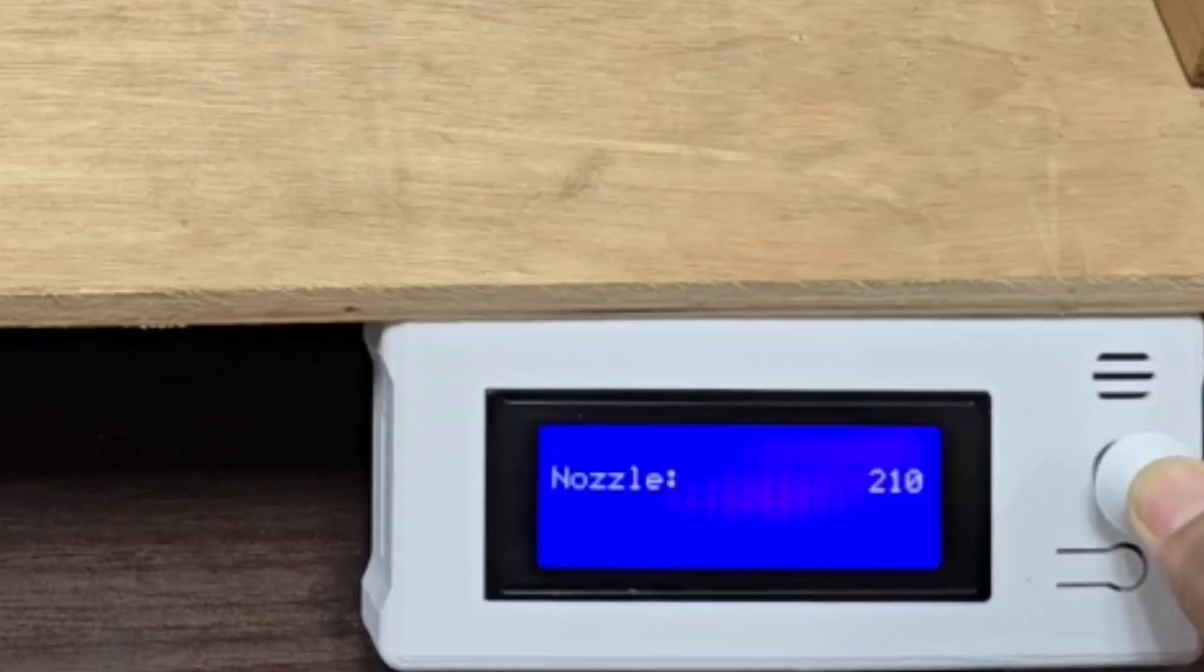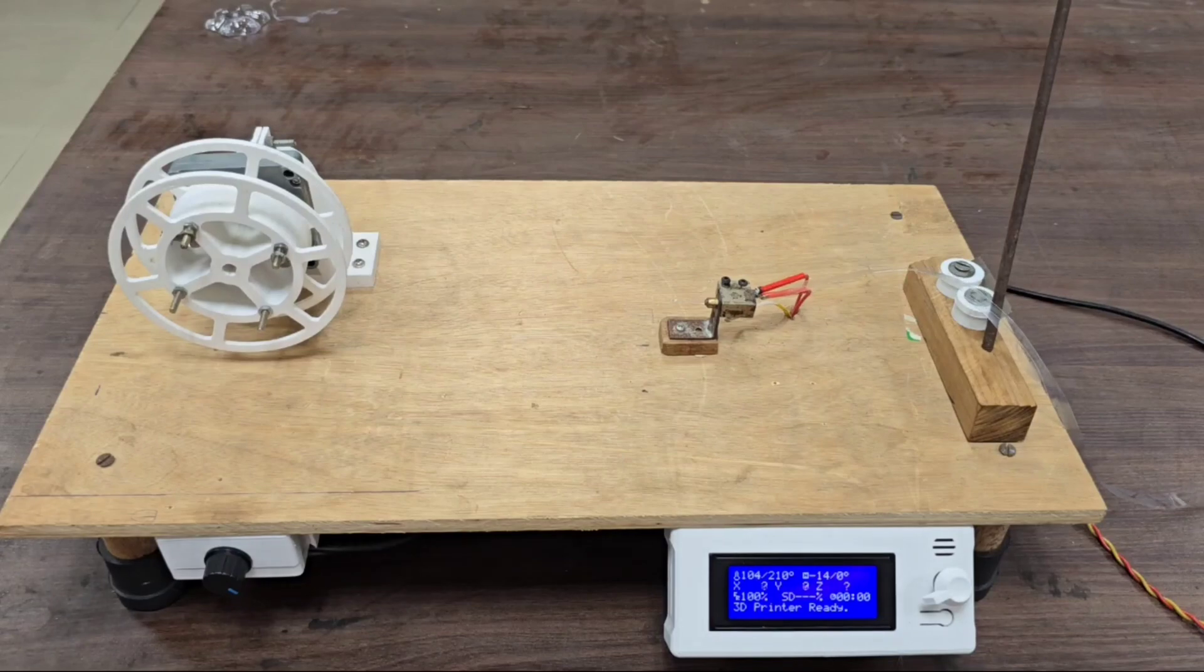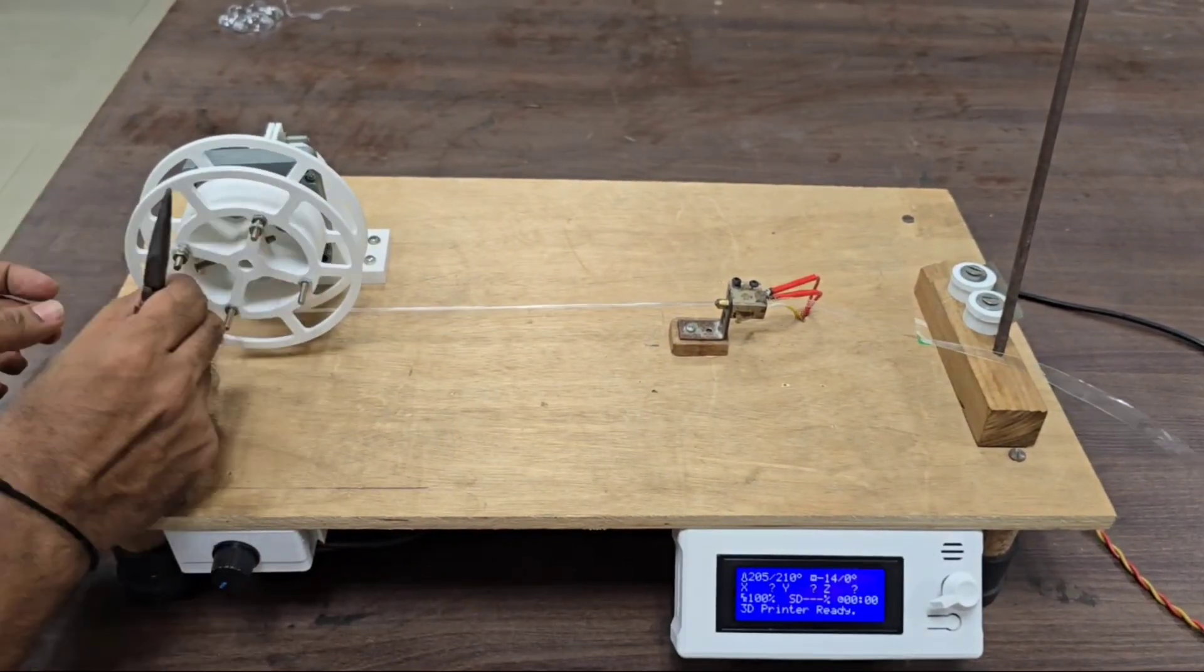Set the temperature to 210 degrees Celsius. Start pulling the strip when temperature reaches about 150 degrees. Then attach it to the motor.